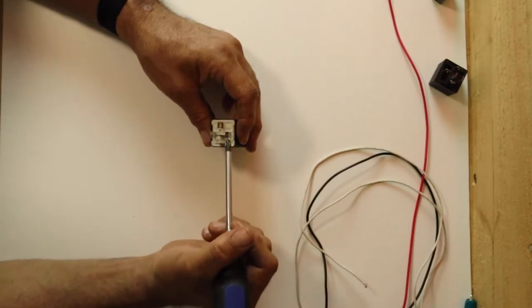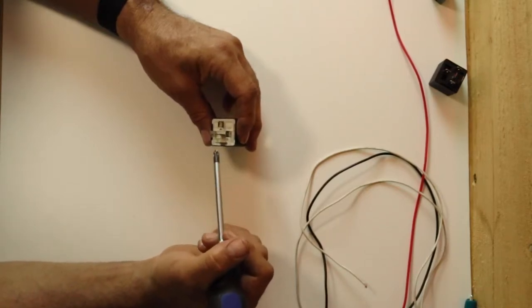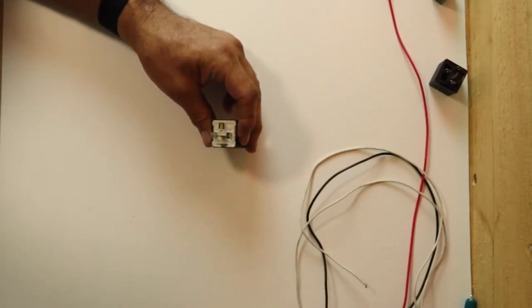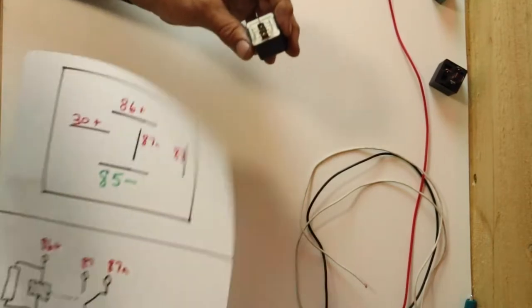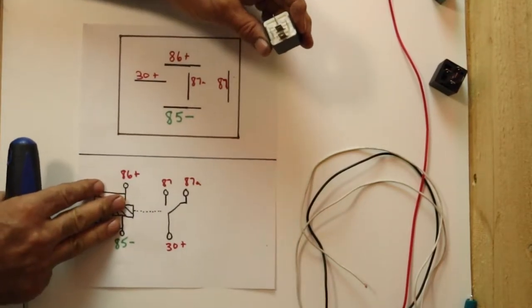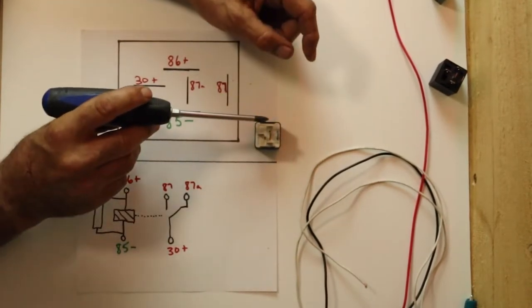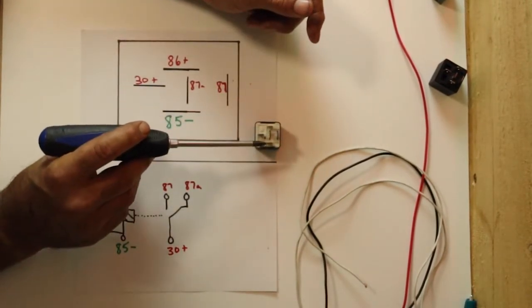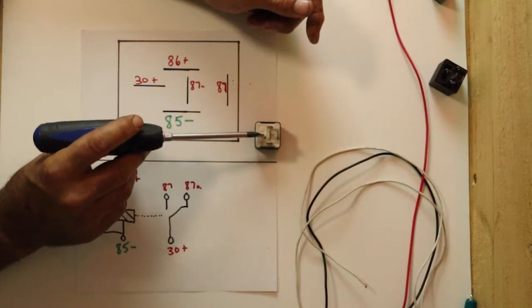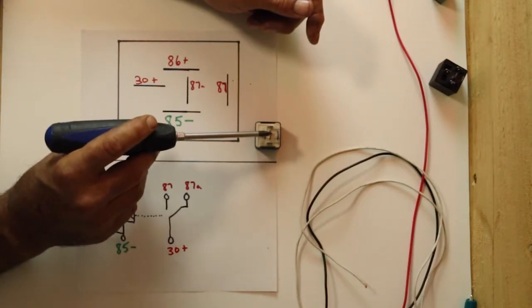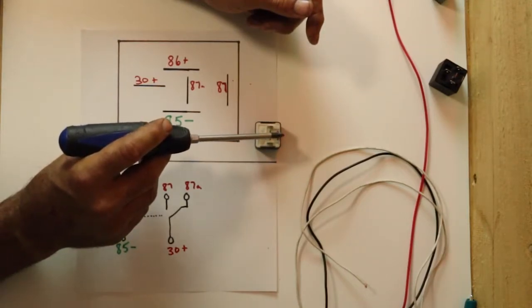When you're looking at your relay, a lot of your factory relays don't have numbers to tell you what pin is what. But don't worry about it. I've drawn it out for you right here so you can look at it and see. Sitting like this, if you look at it, this is 86. This one's 85. This one is 30. This is 87A, and this is 87.